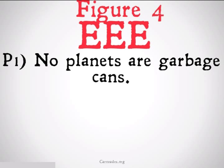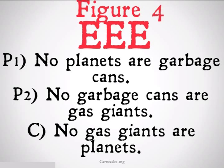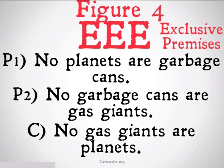Figure 4 EEE: no planets are garbage cans; no garbage cans are gas giants; therefore, no gas giants are planets. Once again, this commits the fallacy of exclusive premises and is therefore invalid.